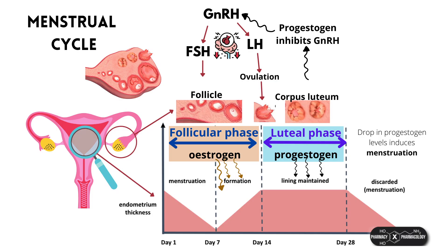Let's go into the roles of the sex hormones in the menstrual cycle. The endocrine system is highly complex and intricate. Hormones tend to have more than one effect, and the hormones and their effects work in concert with each other. Arguably, one of the most impressive examples of this is the menstrual cycle and pregnancy.